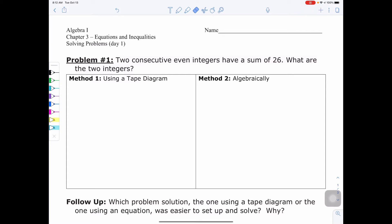Sum means we're going to end up adding. Consecutive even integers means that we have to have even numbers that come consecutively or in a row. So an example of this would maybe be 8, 10. There's two consecutive even integers as an example.